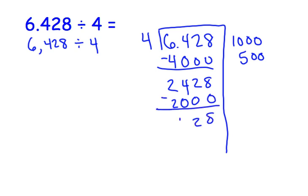Let's take out 100 groups of 4. 100 times 4 is 400. Subtract. That leaves us with 28.